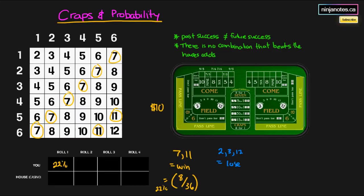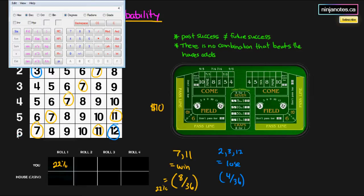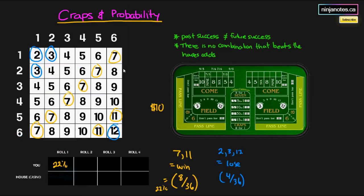Now let's see what the house has. The house wins on a two, three, or twelve — that's four different ways of winning. Why would they take these odds? Four out of thirty-six is eleven point eleven percent. So on the first roll, the house only has an eleven percent chance of winning right away — why would they accept that?